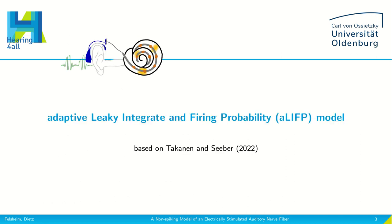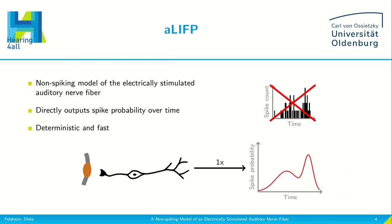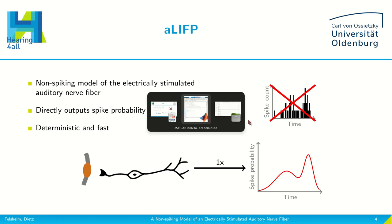This is why we propose an adaptive leaky integrated firing probability — short, R-LIFT — model, which directly outputs the spike probability over time. It is a non-spiking model of the electrically stimulated auditory nerve fiber, so it does not provide individual spikes but the spike probability over time. This makes it deterministic and so fast that I can even run it during this video pitch.